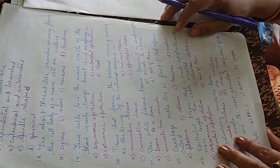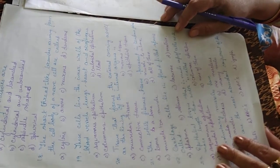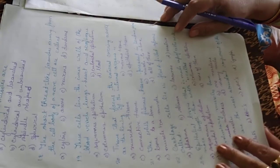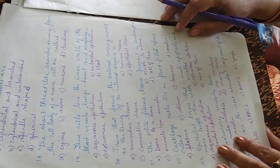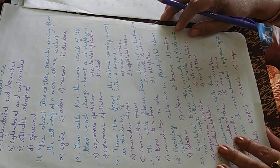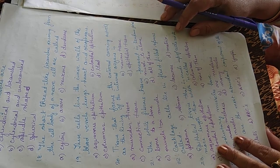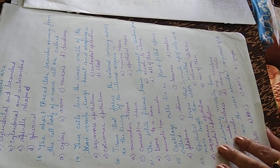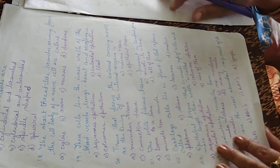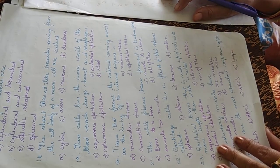The eighteenth question: the short thread-like branches arising from the cell body of a nerve cell are called cytons, axons, neurons, or dendrons. The answer is dendrons.